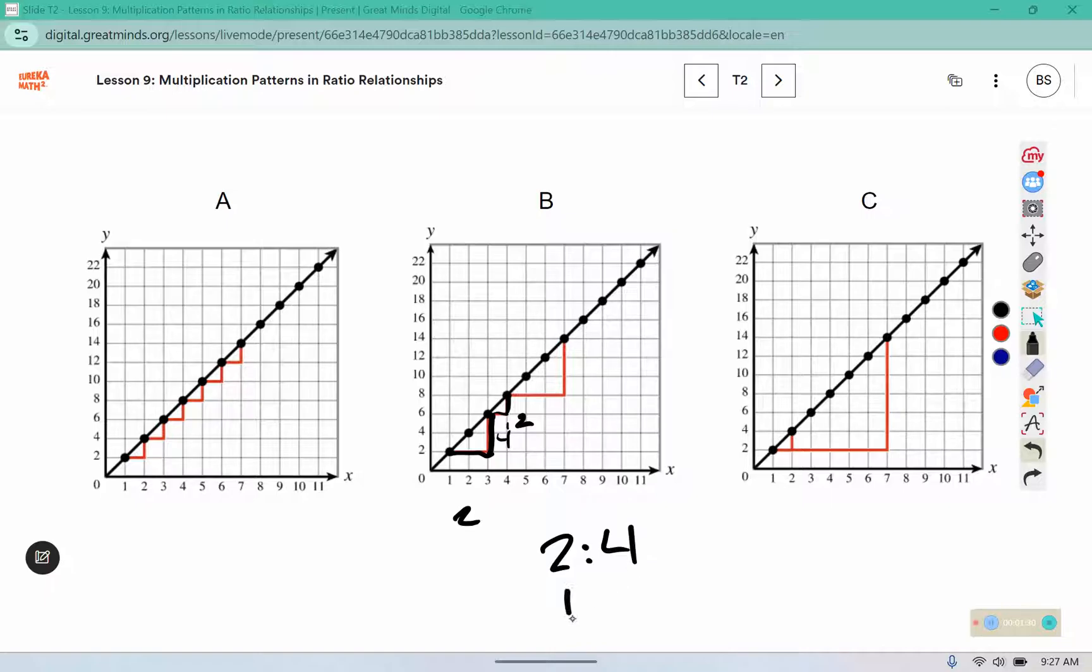Those ratios are the same. So even though the triangles are different sizes, we can still see that ratio relationship is the same. And then in graph C, we have that 1 and 2 nested inside of the 6 plus 12.